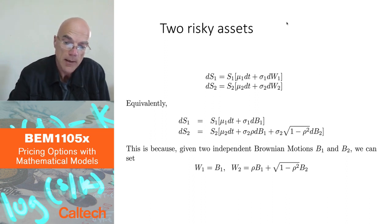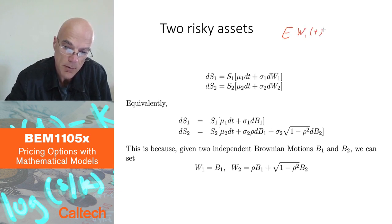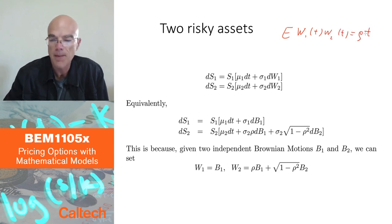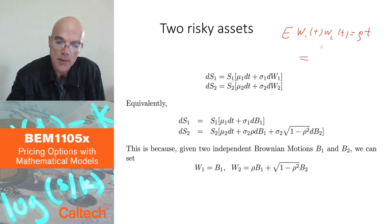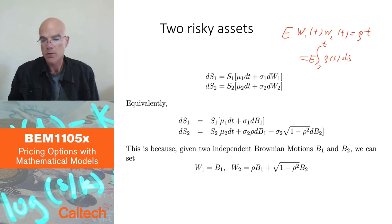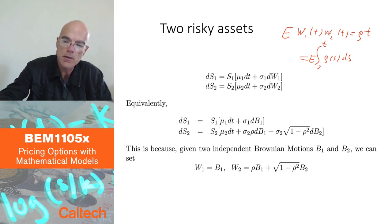So by that, remember, we mean that expectation of w1 of t, w2 of t would be equal to rho t for every t. And when I say rho is a constant, in principle you could have a more complicated correlation, you could have correlation of the type integral zero to t expected value of some rho of s ds. You could also have that, but here we are going to stick to the first case when rho is a constant correlation of this type.